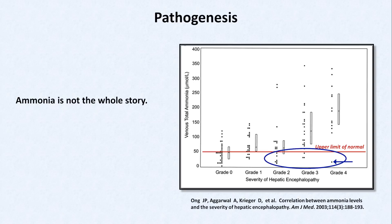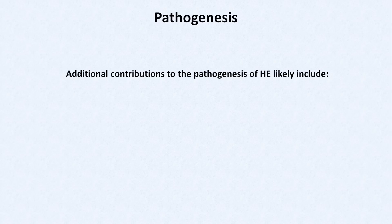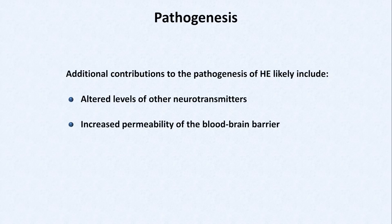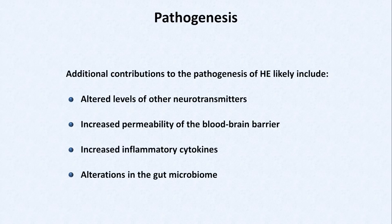So if the correlation between ammonia levels and encephalopathy is not perfect, what else might be going on? Some additional contributions to the pathogenesis of hepatic encephalopathy likely include altered levels of other neurotransmitters, increased permeability of the blood-brain barrier, increased inflammatory cytokines, and alterations in the gut microbiome.